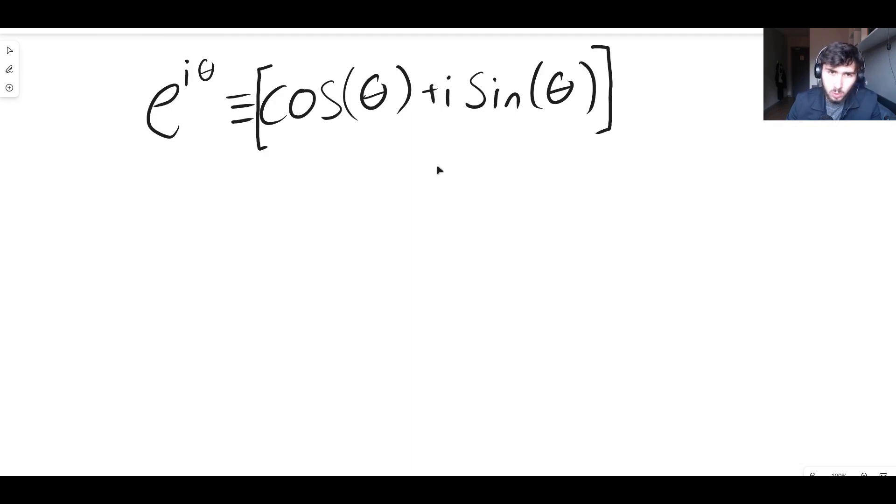So cos of what angle is zero? Well, cos of pi on two. This must be in radians, remember. So let's try it. We can do e to the i pi over two, so we're letting theta be pi divided by two. So e to the i pi over two is then equal to cos of pi on two plus i times sine of pi on two.